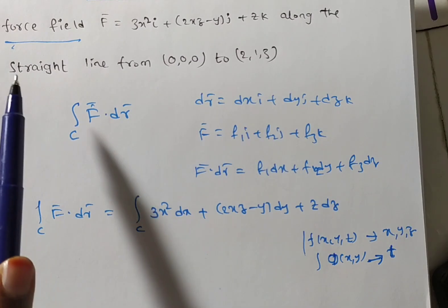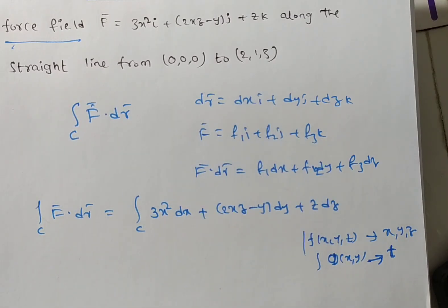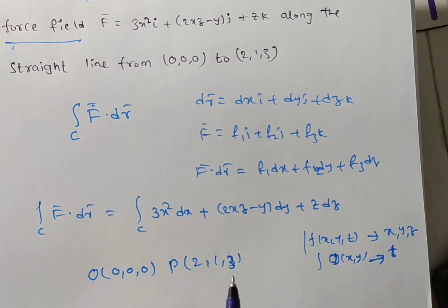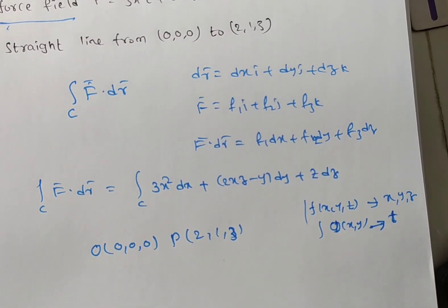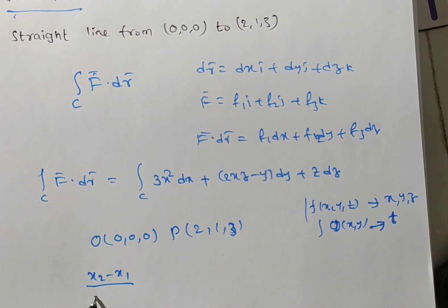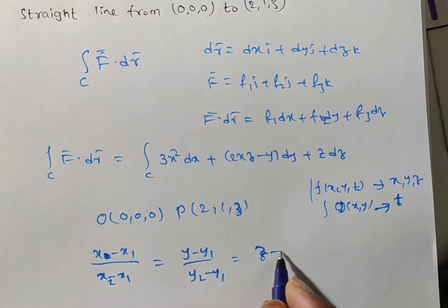What they are given is a straight line along the straight line from a point P (0,0,0) to (2,1,3). So, we know that suppose O origin (0,0,0) or else P you can consider, it is not an issue. OP I am considering this as (2,1,3). What about the straight line equation? If they are given in three dimensional straight line equation, we have x minus x1 by x2 minus x1 equals y minus y1 by y2 minus y1 equals z minus z1 by z2 minus z1.